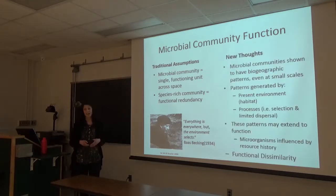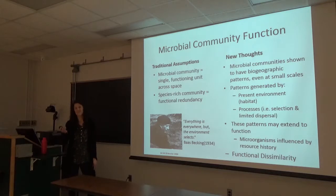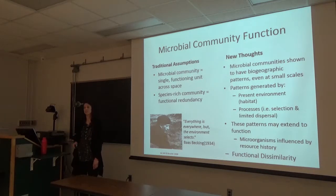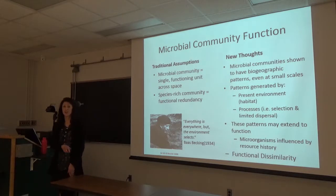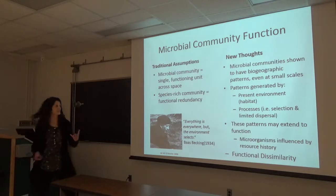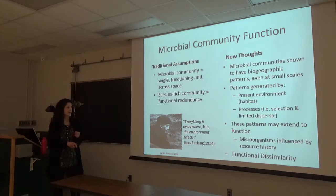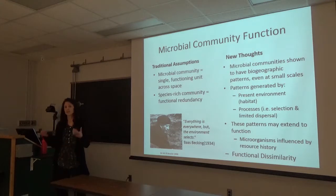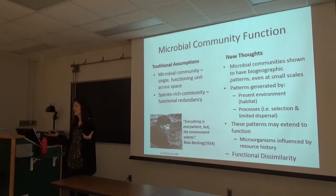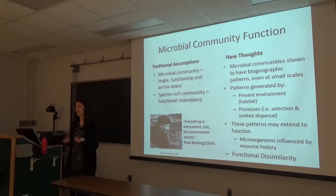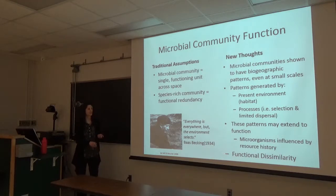Over the past decade, we've shifted past this. Work by Jim Tiedje here at Michigan State showed that microbial communities have biogeographic patterns, down to a few meters, generated by the present habitat—whether you're coming from a grassland or a forest—and also processes such as selection or dispersal. Importantly, these patterns across space may extend to function. Microbial communities may be influenced by their resource history. If we take soil from a grassland and a forest and put them on the same red maple leaf, they may process it at different rates—leading to this idea of functional dissimilarity.